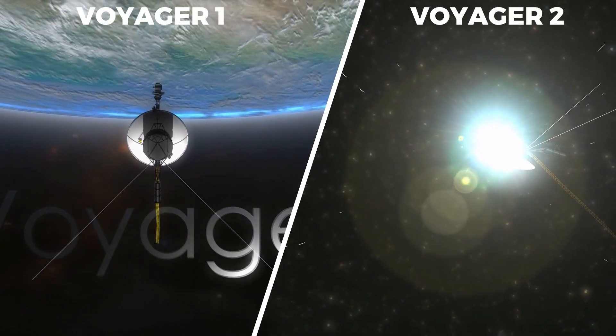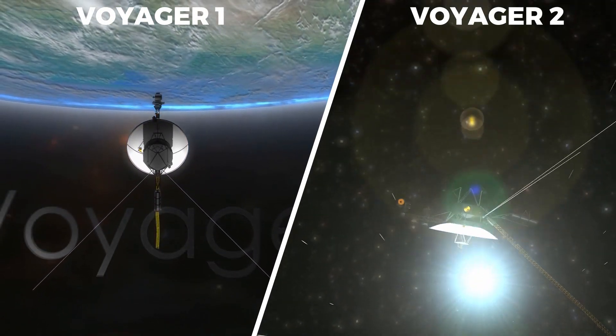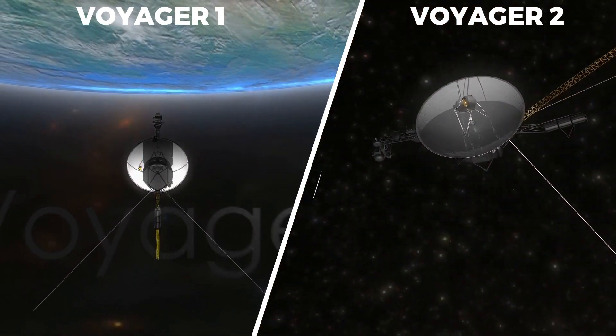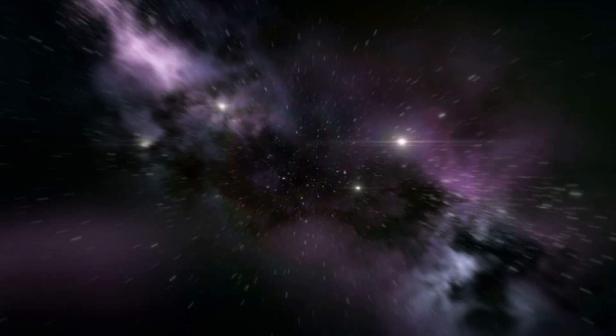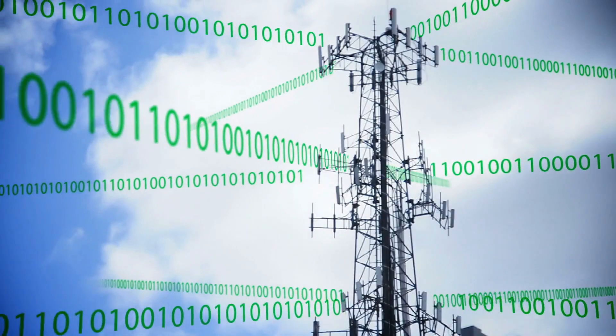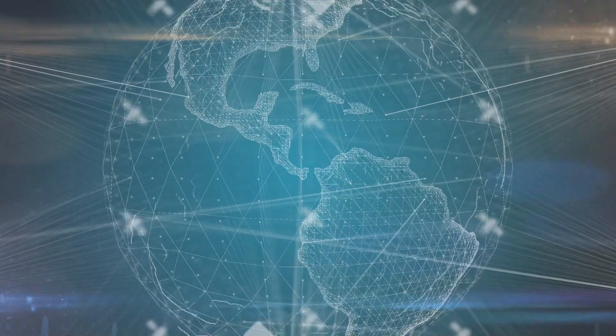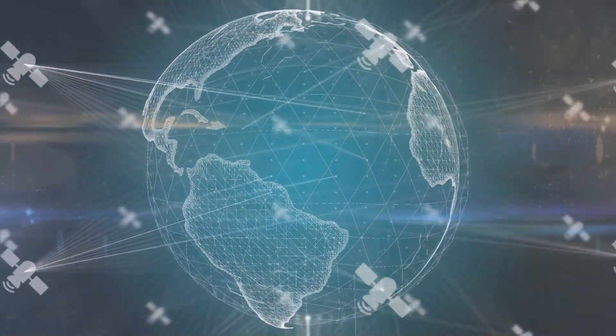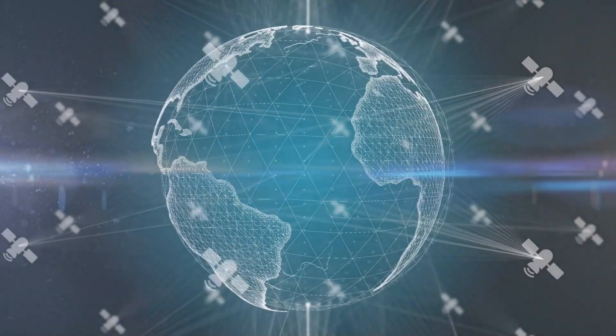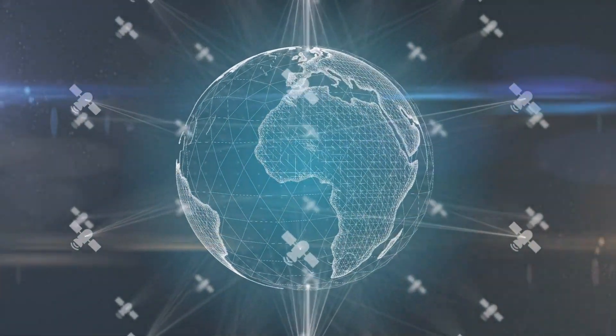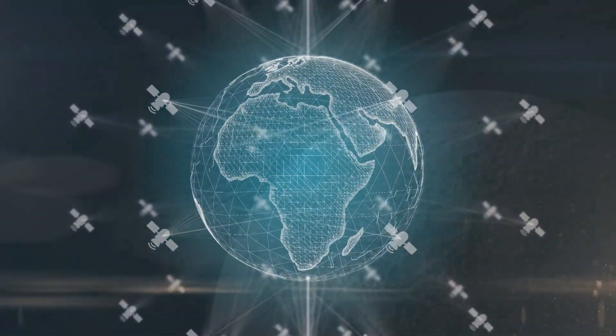As Voyager 1 and Voyager 2 went into space, they sent signals back to Earth that changed the way we think about the universe. With the help of the Deep Space Network and a complex network of radio waves, these space tourists sent back information that would push the limits of what we know. It is now possible to receive data from far beyond our solar system thanks to this amazing deep space communication feat.